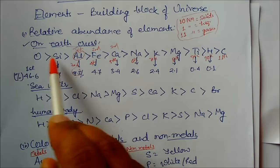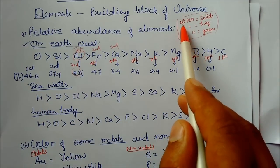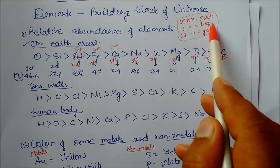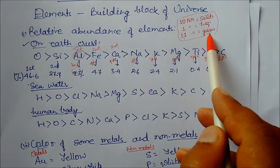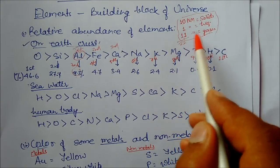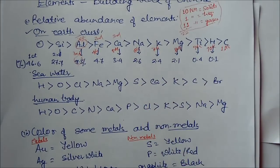These two are nonmetals. If you take all the elements, there are ten nonmetals in solid state, one nonmetal in liquid state, and eleven nonmetals are gases. There are twenty-two nonmetals present in the periodic table.